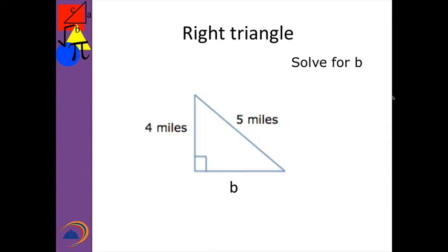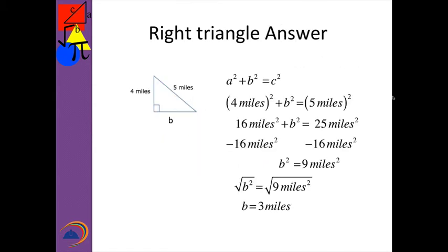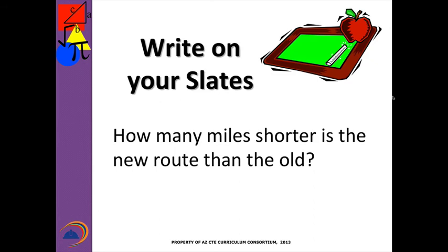Next, here's my right triangle. Take a moment and solve that one for B. Welcome back — let's look. I have 4 miles and 5 miles this time. 4 miles is one of the sides and C was 5 miles, so I came out with 3 miles. Now, here's the question: how many miles shorter is the new route than the old one? First find out how long the new route is, then find the difference.